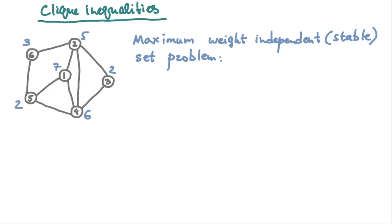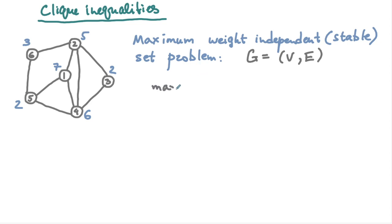We'll start by recalling the maximum weight independent set problem, also known as the maximum weight stable set problem. In this problem we are given a simple undirected graph, typically denoted G, with a set of vertices V and set of edges E. We want to find the largest weight subset of vertices such that no two vertices in the set are adjacent to each other, where weights are associated with all vertices.